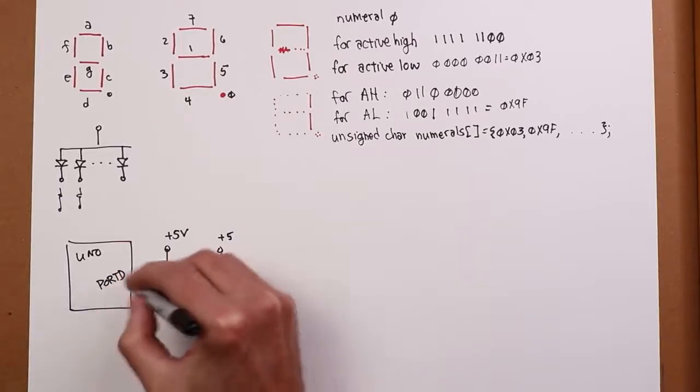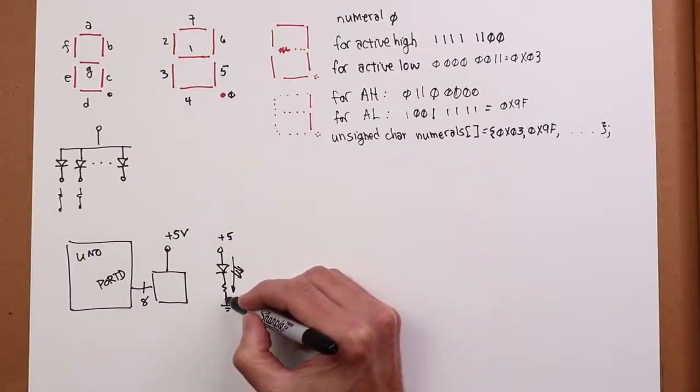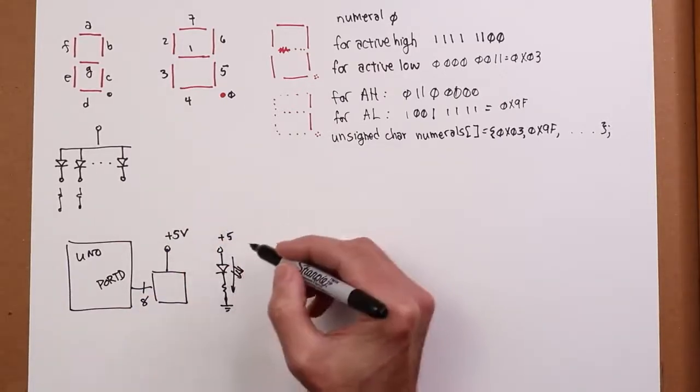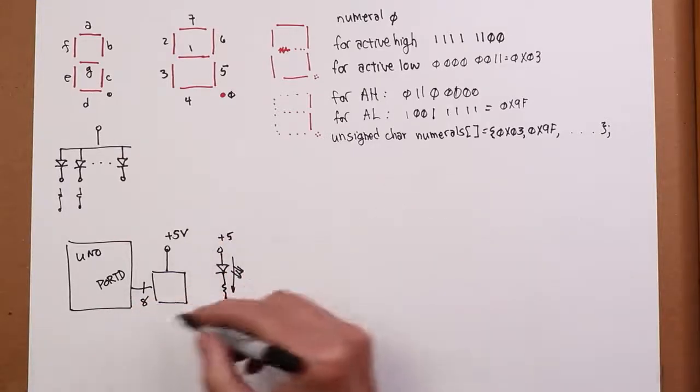When the port pin happens to go high, all right? So this point is going to be at plus five. You got plus five plus five. There's no current flow. LED is off. All right. So this works out really well for this active low.